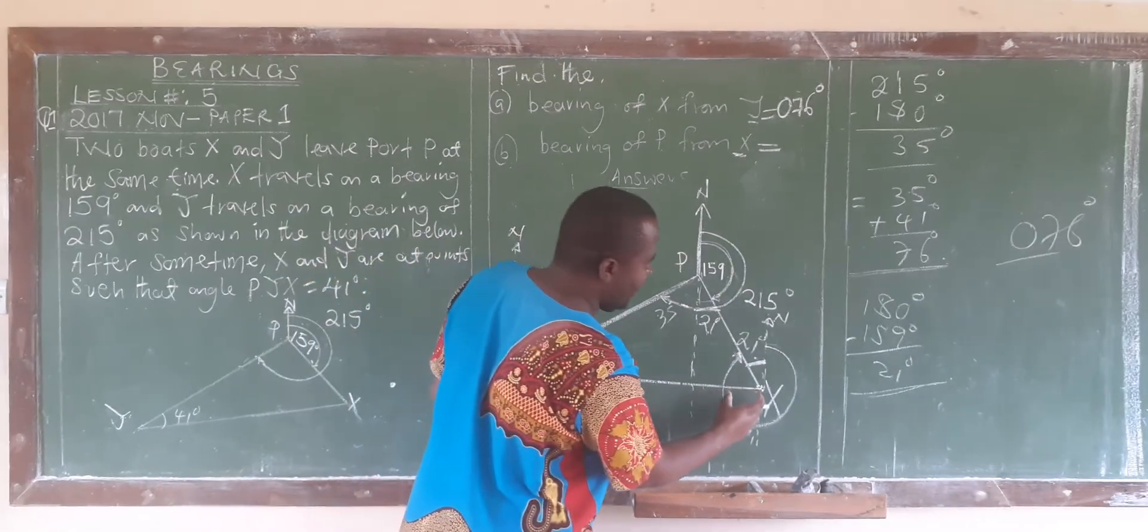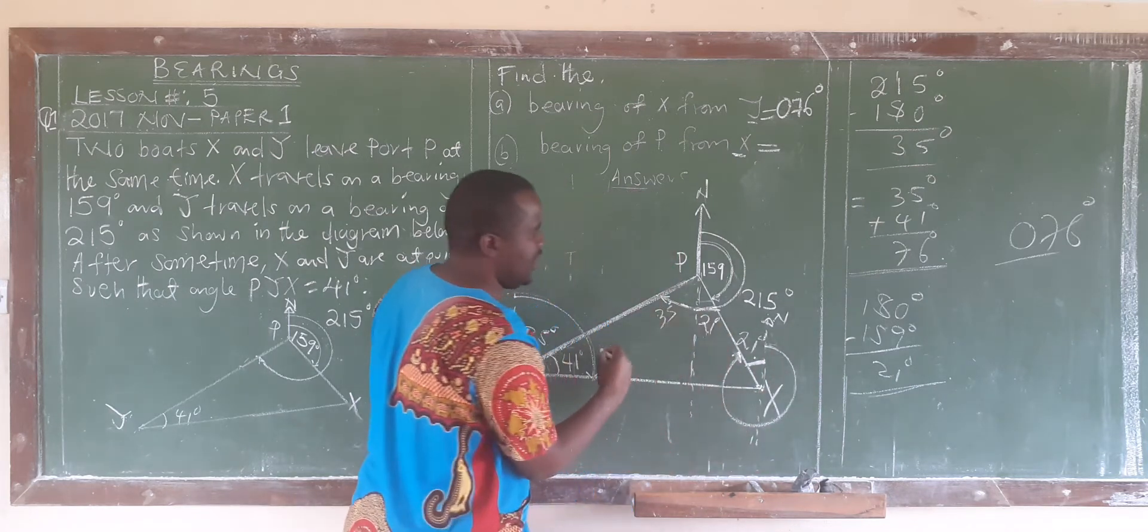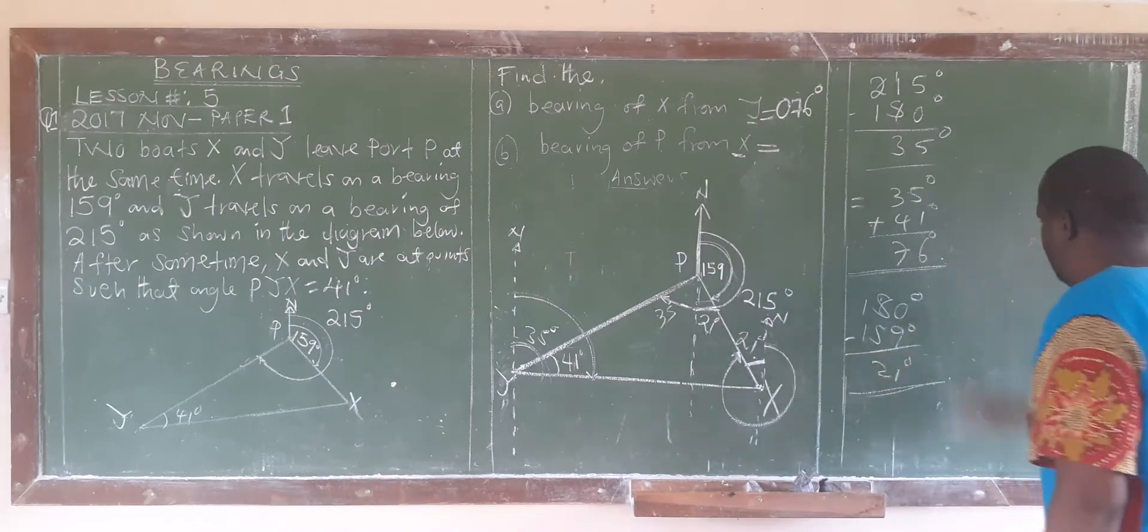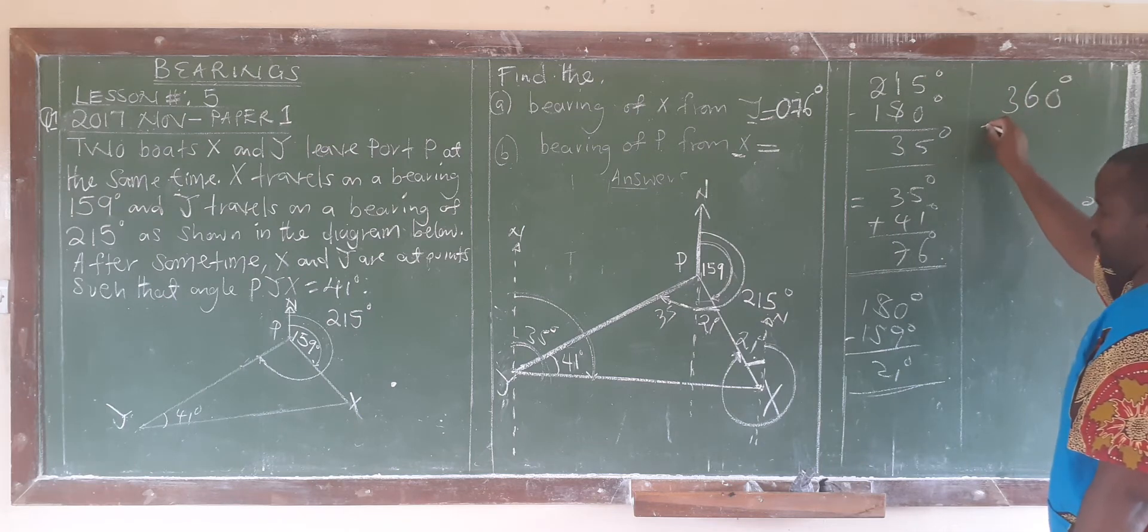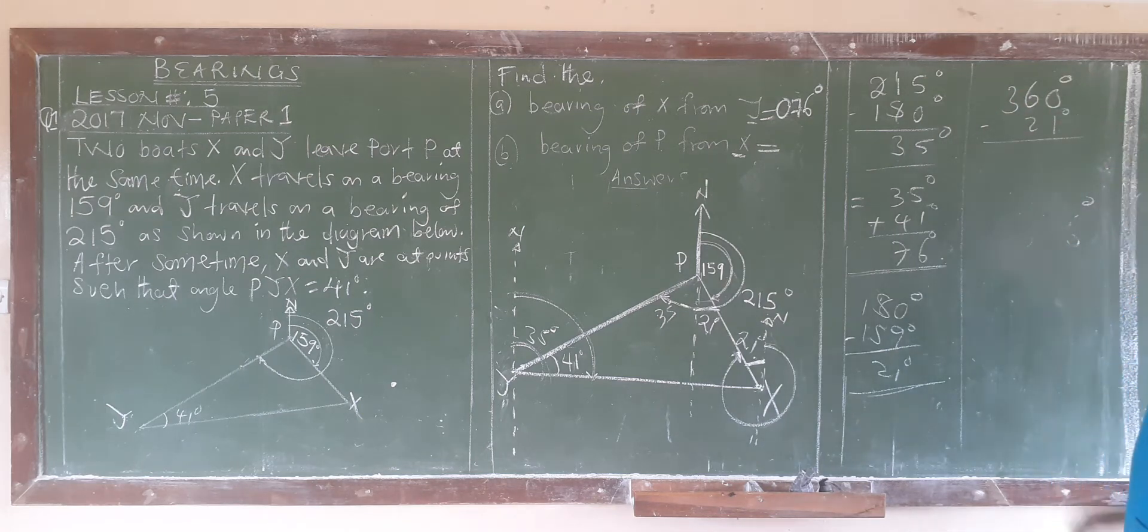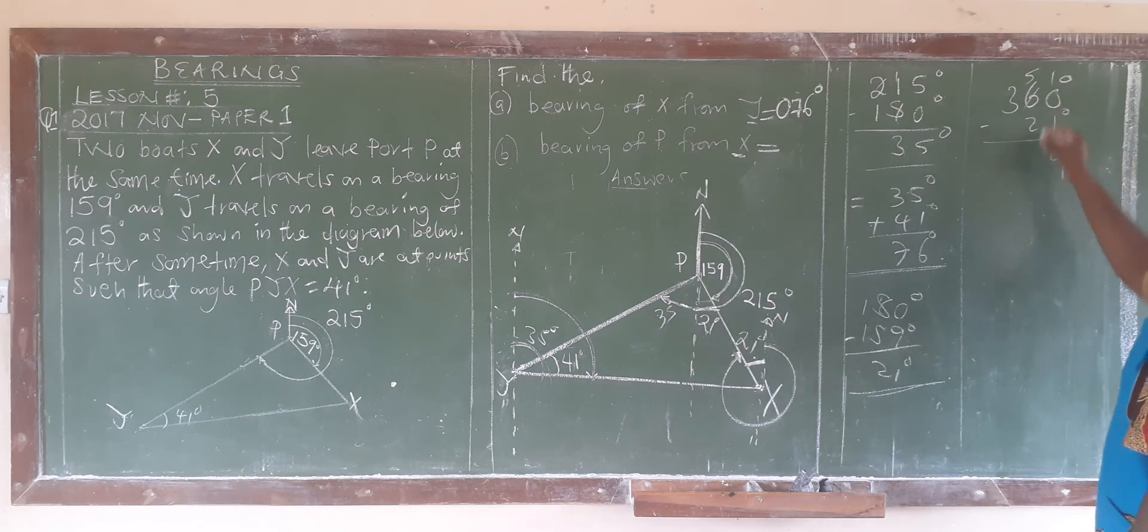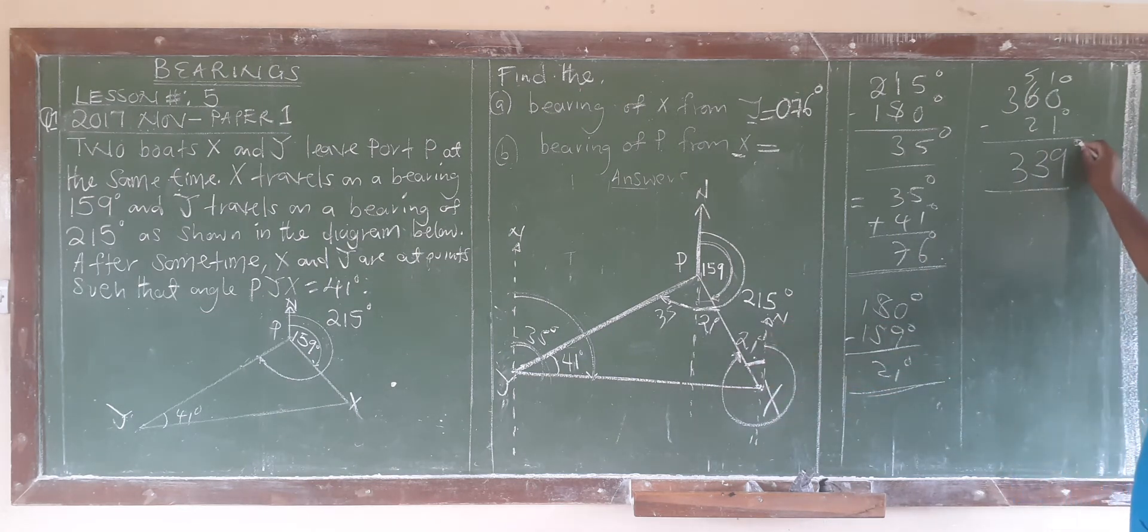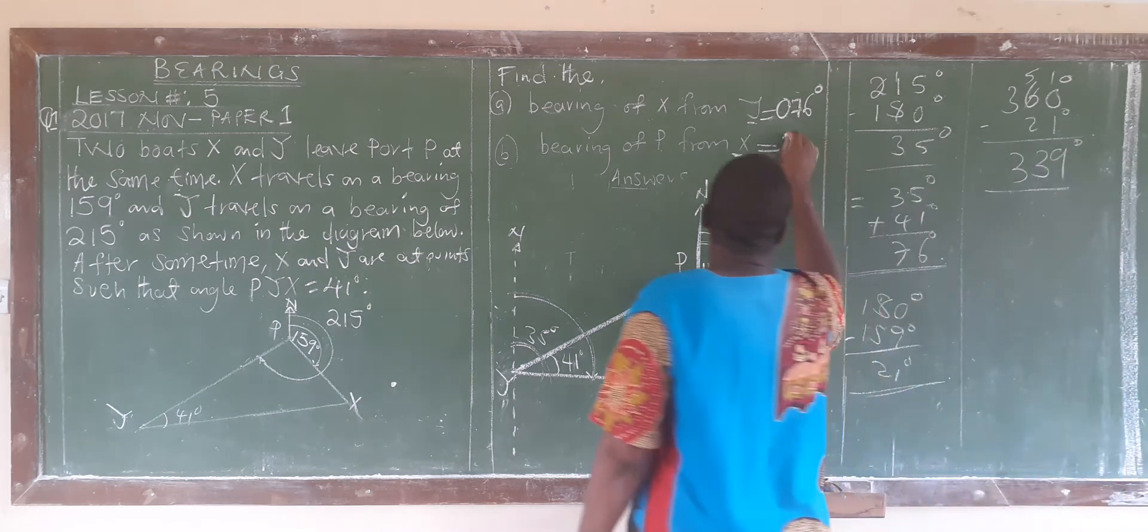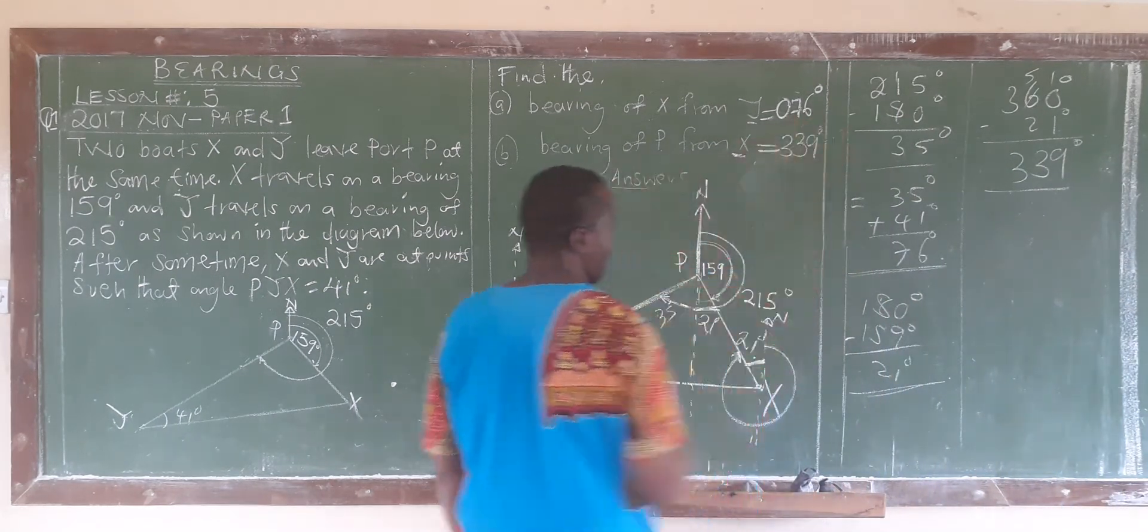So now how do we get the final answer? We are going to say the final value is supposed to be 360 degrees minus 21. So the bearing from this point up to that point is 339 degrees, which is the final value.